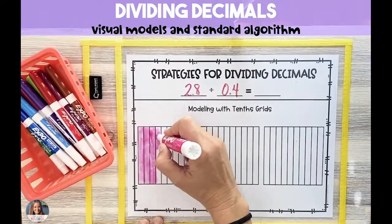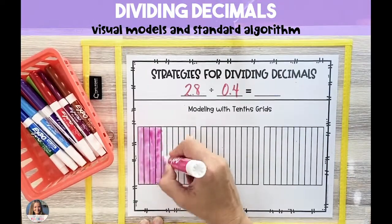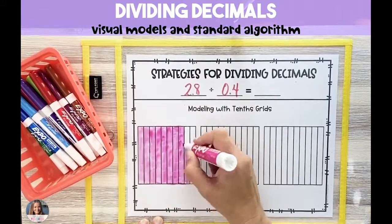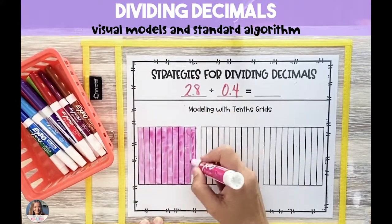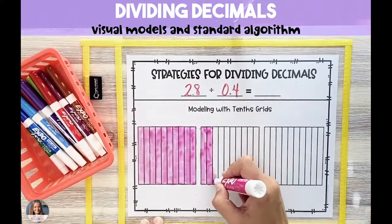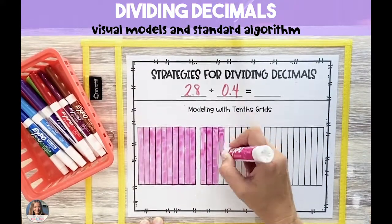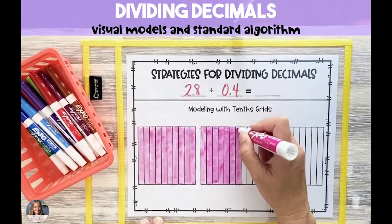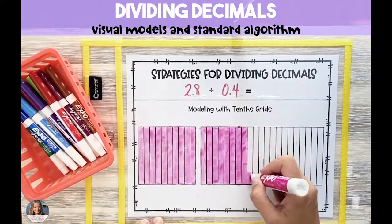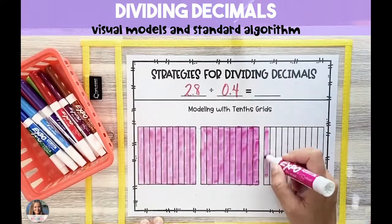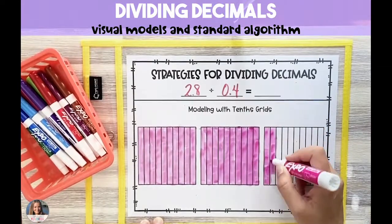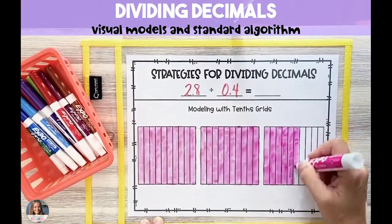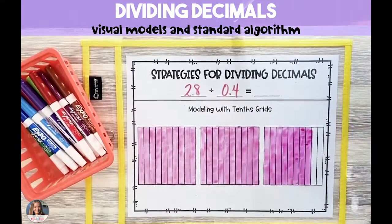To divide a decimal number to the tenths place by another decimal number to the tenths place using a visual model, we're going to use wholes that are split into tenths instead of hundredths. The first thing that we do is shade in our dividend. In this case, it's 2 and 8 tenths, so we need three whole models so that we can shade in our 2 and 8 tenths.